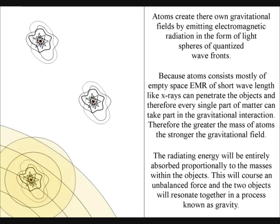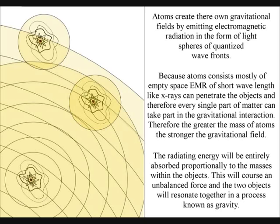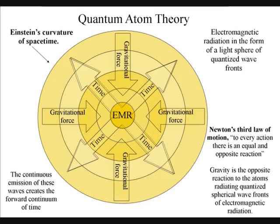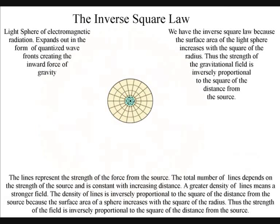Therefore every single part of matter can take part in the gravitational interaction. The gravitational field will propagate at the same speed that the electromagnetic radiation moves, the speed of light. Therefore there is no instantaneous action at a distance.